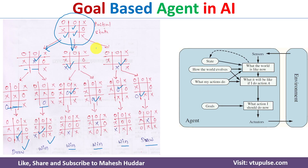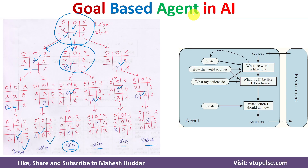Because the goal is to win the game, the AI agent will select the option where it wins both times, rather than the remaining two options where the possibility of winning is only once. This is how the goal-based agent works in the real world.